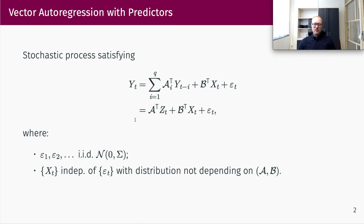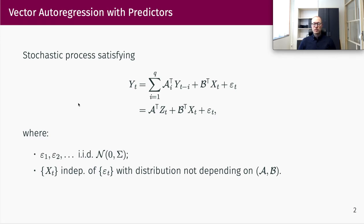For simplicity, I'll write this in a more compact way. I've defined z_t such that if I stack all the coefficients in a big matrix, capital alpha, I can write the model compactly. We assume the error terms are i.i.d. from a normal distribution with mean zero and covariance matrix Sigma, and the predictor process is independent of the error process. The distribution of the predictor process does not depend on the model parameters — with these two assumptions, we say the predictors are exogenous.